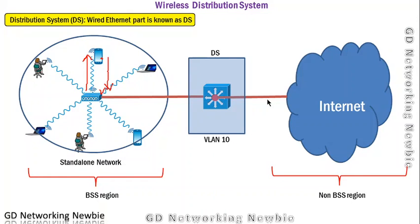This distribution system is the Ethernet part which is going to connect our BSS — basic service set — to the rest of the network or to some other network. So this is known as the distribution system.